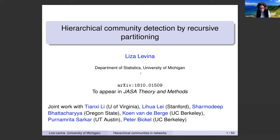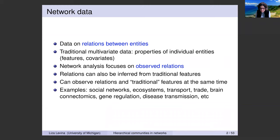Before I tell you about that specific work, let me give you a brief introduction to networks. I know some people here know a lot about it, but I don't want to presume, so I'll just do this relatively quickly. When I say network data, I mean data on relations between entities that is directly observed. This is in contrast to traditional multivariate data, which normally has to do with properties of individual entities—a feature vector about one person: their age, gender, race, grade, whatever.